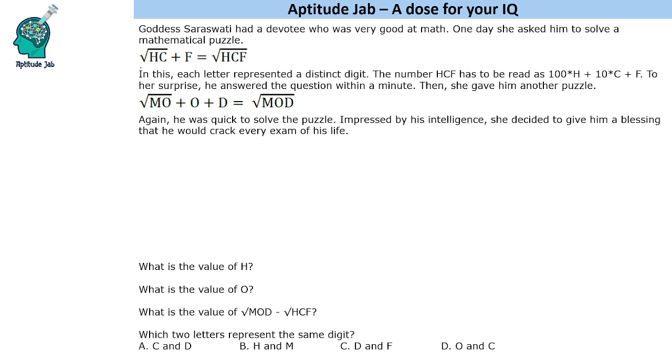Root of HC plus F is equal to root of HCF. In this, each letter represented a distinct digit. And the number HCF has to be read as a three digit number. So let's say if it is 256, just taking an example.